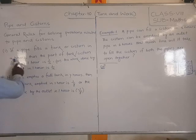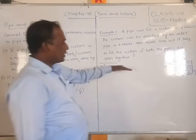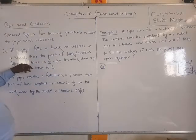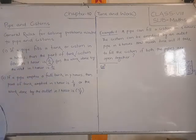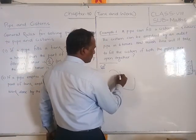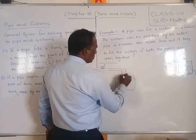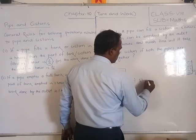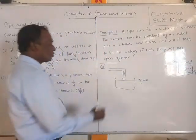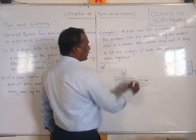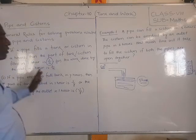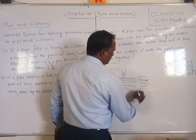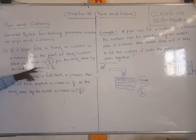I have written some general rules for solving problems related to pipes and cisterns. There are inlet pipes and outlet pipes. Rule 1: If a pipe fills a tank or cistern in X hours, then the part of the tank filled in one hour is 1 by X. The work done by the inlet pipe in 1 hour is equal to 1 by X.